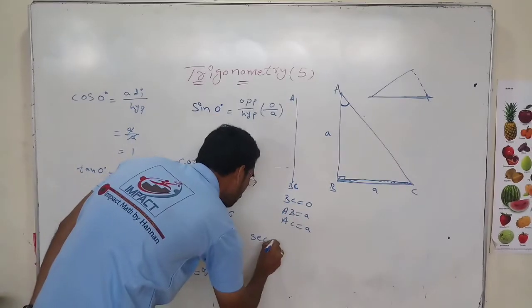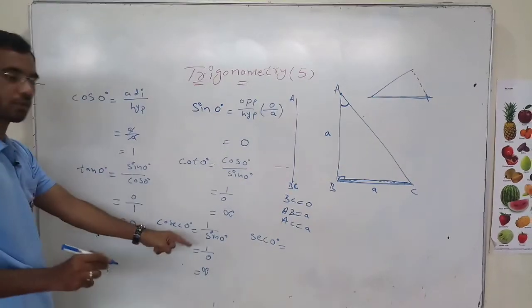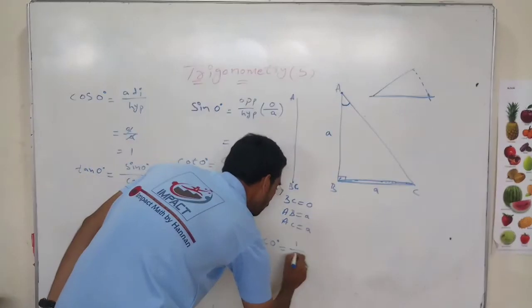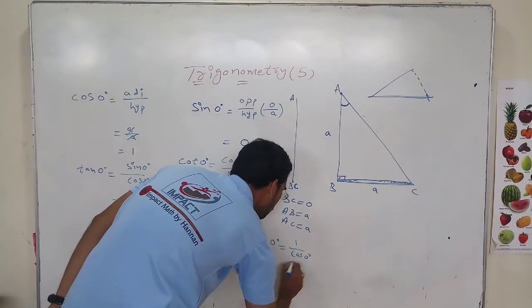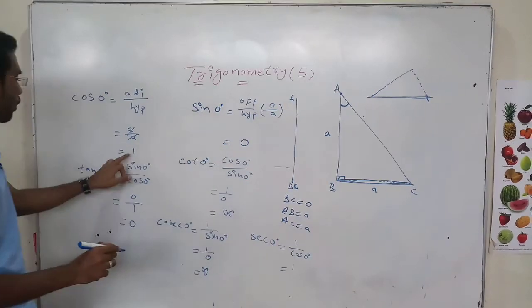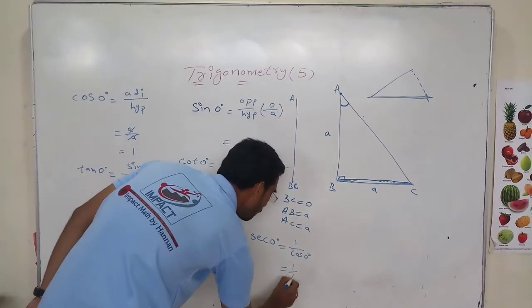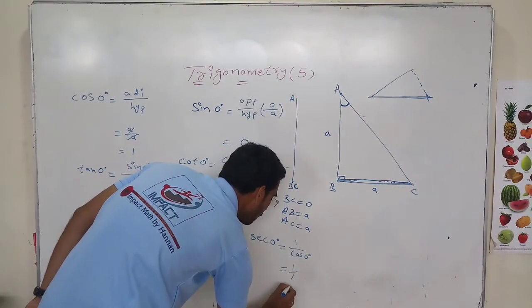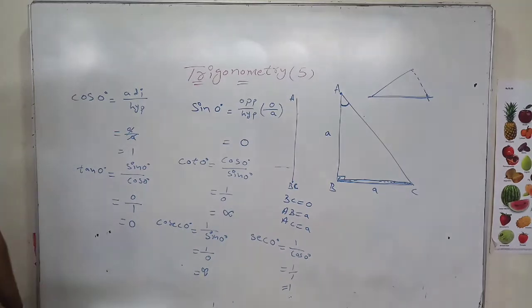Then, sec 0 degrees. Sec theta equals 1 by cos 0 degrees. 1 by cos 0 is 1 by 1, which equals 1. So sec 0 degrees equals 1.